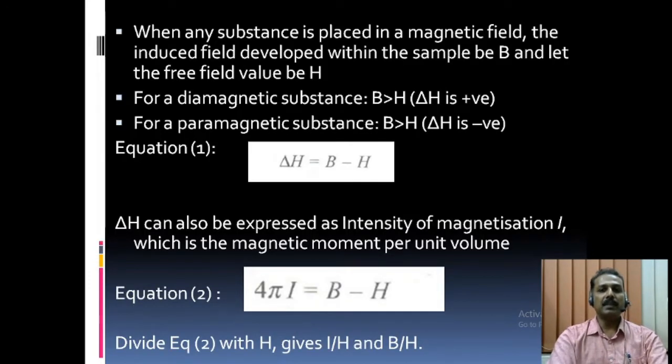When any substance is placed in a magnetic field, the induced field develops within the sample B and let the free field value be H. For a diamagnetic substance, the free field value is always less than B, i.e., delta H is positive, whereas for a paramagnetic substance, delta H is negative, as shown by equation 1. Delta H can also be expressed as the intensity of magnetization I, which is the magnetic moment per unit volume, shown by equation 2.